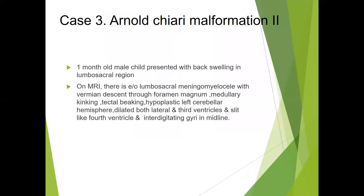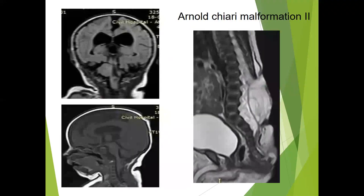The third case was of Arnold Chiari malformation type 2. A one-month-old male child presented with back swelling in the lumbosacral region. On MRI, there is lumbosacral meningomyelocele. In the posterior fossa, there is vermian descent through the foramen magnum, medullary kinking, tectal beaking, hypoplastic left cerebral hemisphere, dilated lateral and third ventricles, and a slit-like fourth ventricle. This was a case of Arnold Chiari malformation type 2.